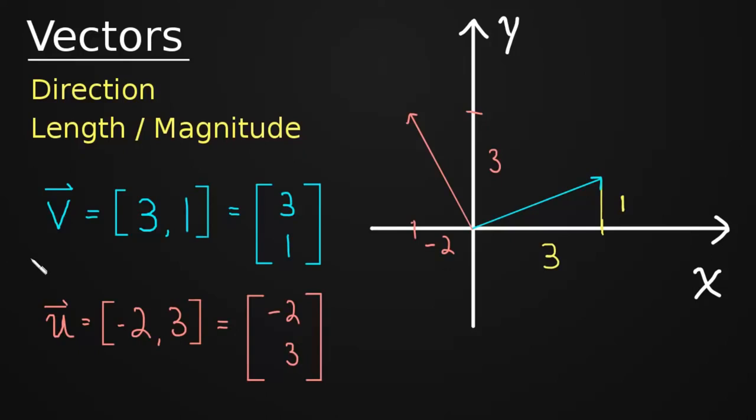But what about direction and length? Does this capture direction and length? Just using two components, how does that tell us direction and length? Well, it tells us direction because this is the vector that moves over 3 in X and up 1 in Y. That's its direction, over 3, up 1. It points in that direction. But what about length?